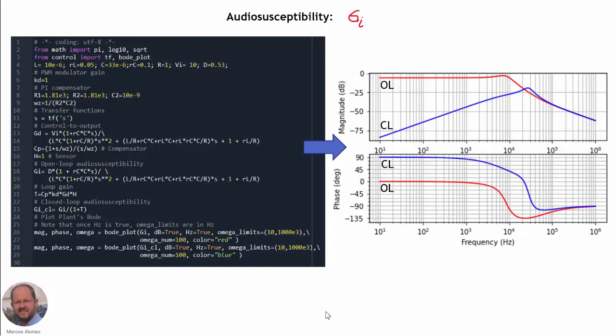Here we have the plots corresponding to the audio susceptibility — the magnitude in red in open loop, and in blue the magnitude of the audio susceptibility in closed loop. Again, up to approximately the bandwidth of our converter, we are having a much better response also in terms of audio susceptibility. This concludes this presentation. Thank you very much for watching. Please let me know if you have any comment or question, and I hope to see you in the next video. Goodbye.